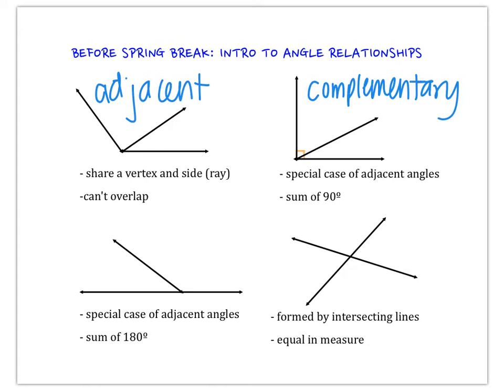So complementary is a special type of adjacent where they would create a 90 degree right angle together. In the bottom left, similarly, these two are also still adjacent to one another, but this time they form a straight line, which we know has a sum of 180 degrees. These were supplementary angles.